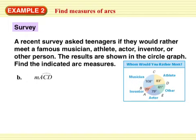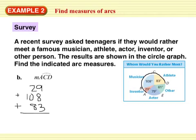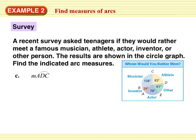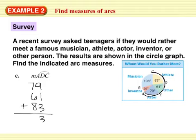Now the measure of arc ACD. So I'm going to start A, go through C, and hit D. 29 plus 108 plus 83, 220 degrees. The measure of angle ADC. A, this way DC, would be 79, plus 61, plus 83. 14, 22, 223 degrees.